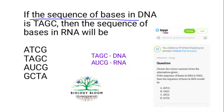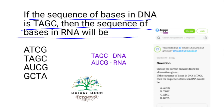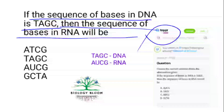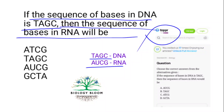If the sequence of bases in DNA is TAGC, then the sequence of bases in RNA will be — taken from Topper as it is. In RNA, uracil replaces thymine. So for DNA sequence TAGC: A pairs with U, and G pairs with C. The answer is AUCG — A-U-C-G will be the correct one.